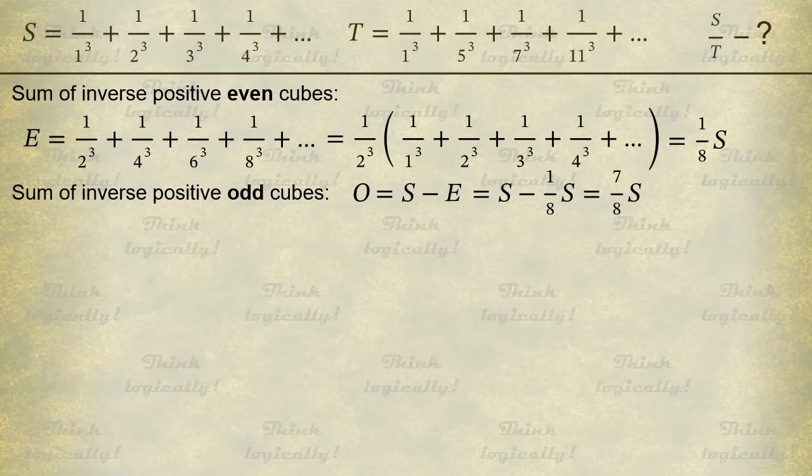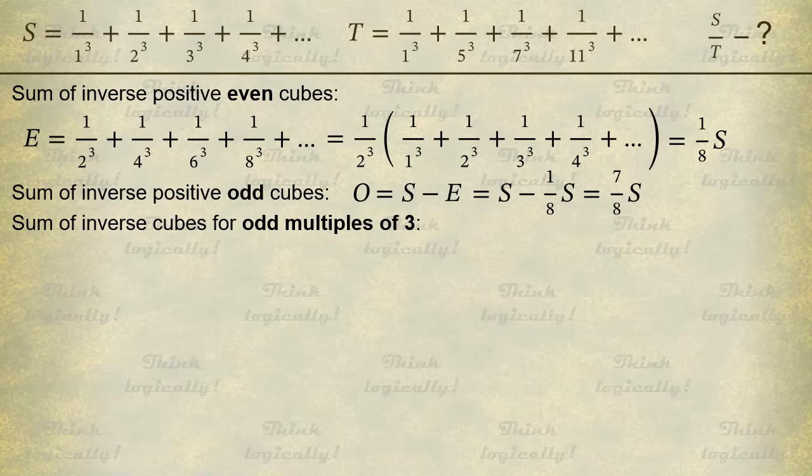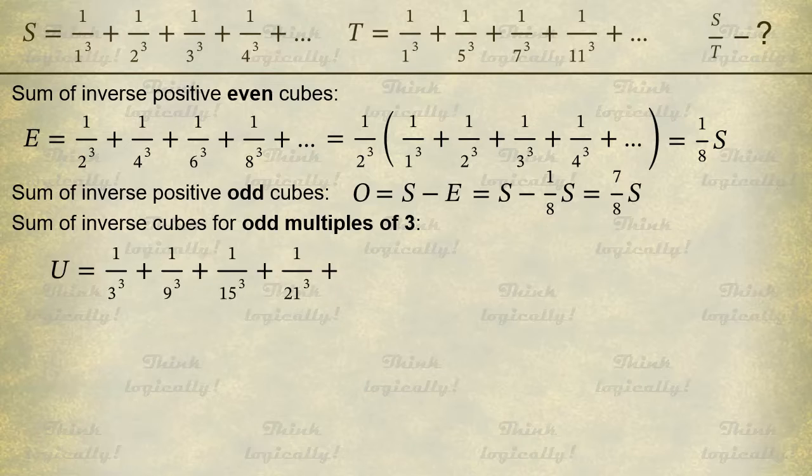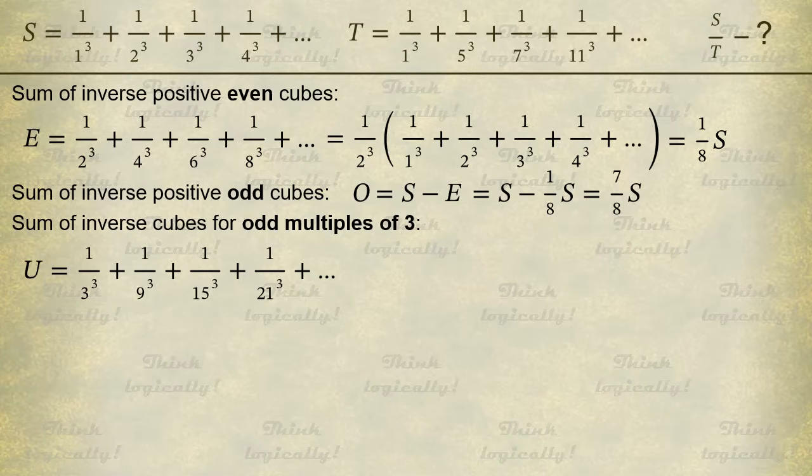Next, we need to cut out the inverse cubes of odd multiples of 3. That is, the numbers not divisible by 2 but divisible by 3. So we need to find the sum of inverse cubes of odd multiples of 3. Denote it with the letter U. Why U? Because I like U.